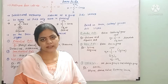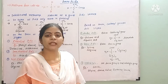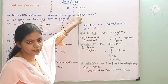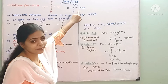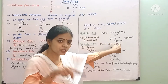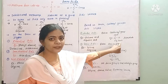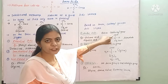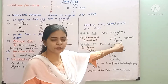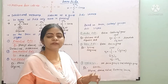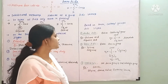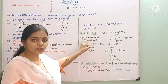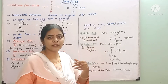In acidic amino acids, normally one carboxyl group is present, but there is an additional carboxyl group. The carboxyl group provides acidic nature, so with an extra carboxyl group the amino acid becomes more acidic — these are called acidic amino acids. Examples are glutamic acid and aspartic acid.